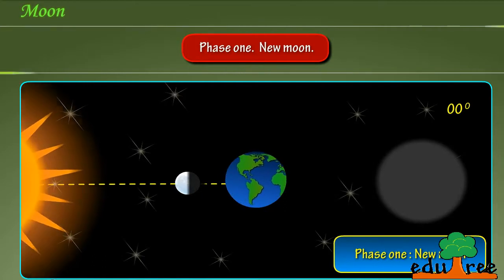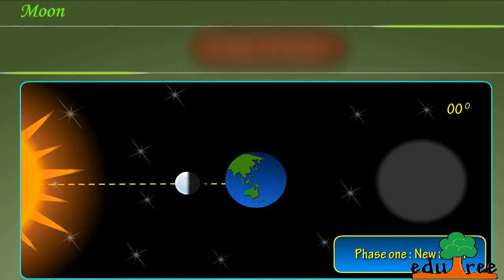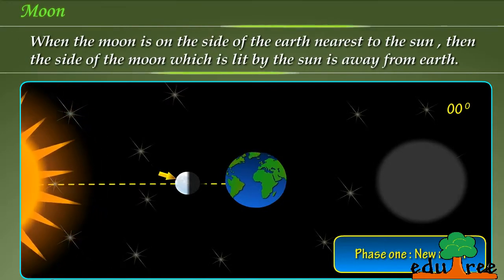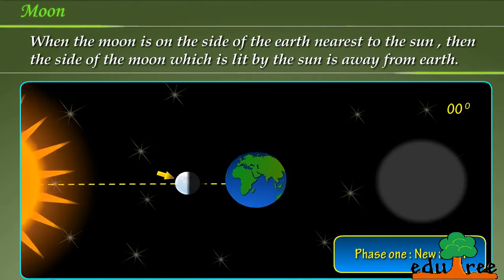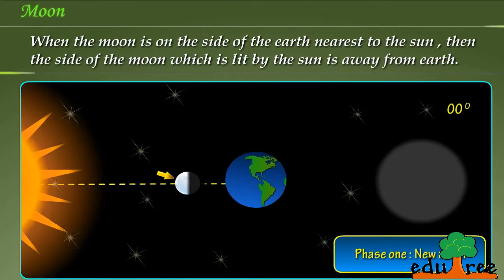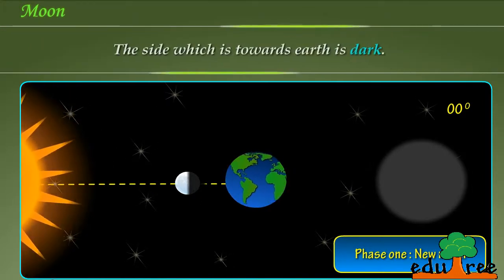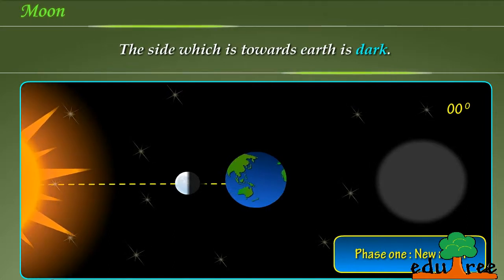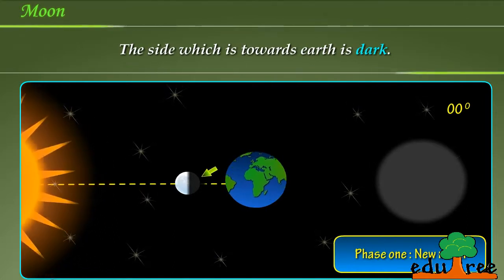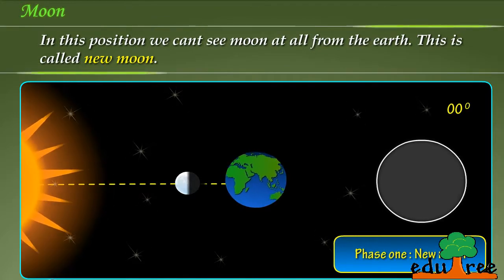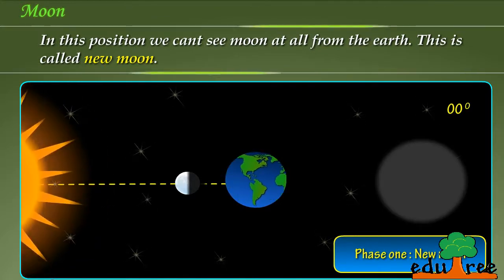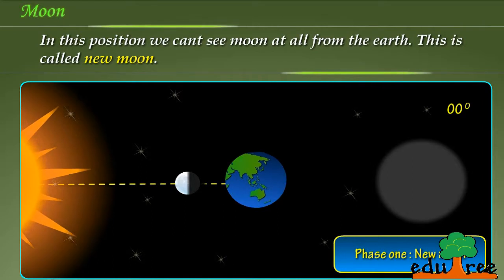Phase 1: New moon. When the moon is on the side of the earth nearest to the sun, then the side of the moon which is lit by the sun is away from earth. The side which is towards earth is dark. In this position, we can't see moon at all from the earth. This is called new moon.